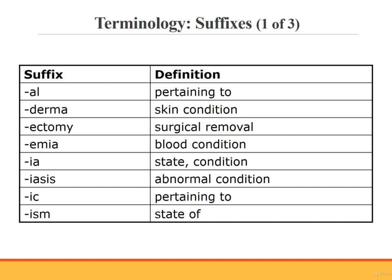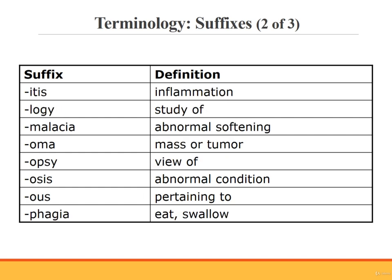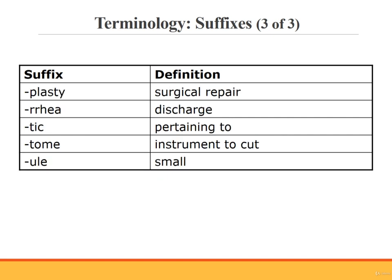Suffixes used in relation to the integumentary system include: -al, -derma, -ectomy, -emia, -ia, -iasis, -ic, -ism, -itis, -logy, -malacia — meaning abnormal softening. An example using the suffix -malacia is onychomalacia, meaning softening of the nails. Also: -oma, -opsy, -osis, -ous, -phagia, -plasty, -rrhea, -tic, -tome, and -ule.